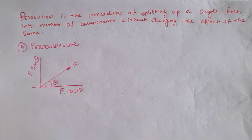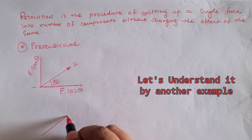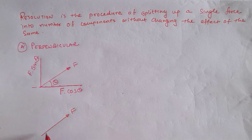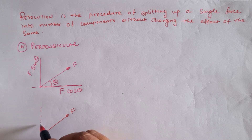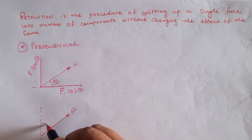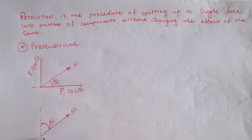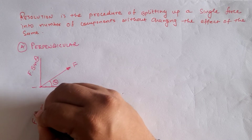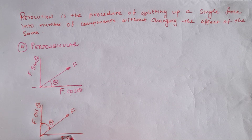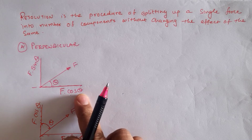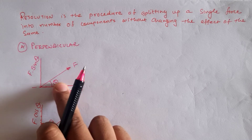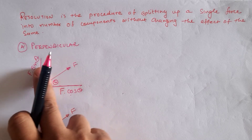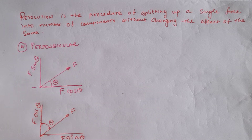Now, if we take the same example with force F, but the angle theta is measured from the vertical axis, then note that the vertical component is F cos theta while the horizontal component is F sin theta. So cos theta is always associated with the component along the axis from which the angle is measured, and sin theta with the perpendicular component.